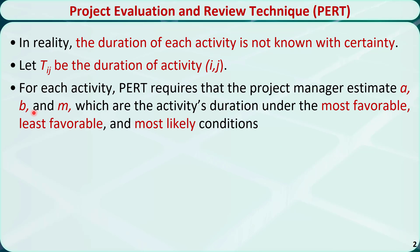B is the estimate of the activity's duration under the least favorable conditions. For example, it rains a lot, the weather is too hot for the workers to continue to work, or some needed construction materials are sold out and require a long time to be delivered. M is the estimate of the activity's duration under the most likely conditions.